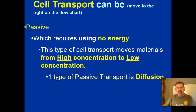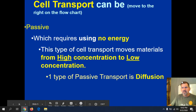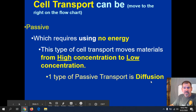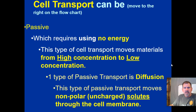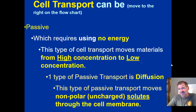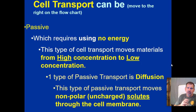One type of passive transport is diffusion. Diffusion moves non-polar, meaning uncharged, particles — solutes — through the cell membrane. Recall from physical science that solutes are things dissolved inside a liquid solvent. So diffusion moves small, non-charged molecules through the cell membrane.